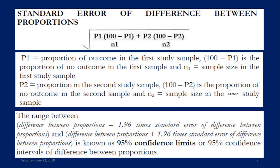Standard error of difference between proportions can be calculated using the formula: square root of P1 multiplied by (100 minus P1) divided by N1, plus P2 multiplied by (100 minus P2) divided by N2.